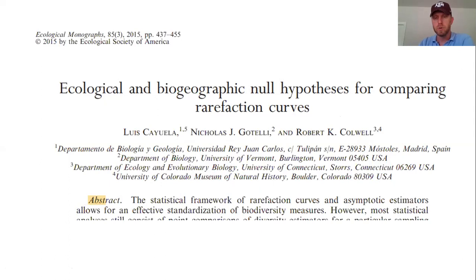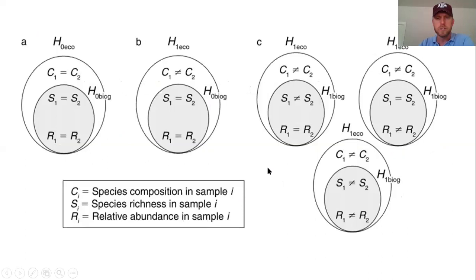We'll go over in this lecture how we think about some of those metrics of species diversity. Ecological Monographs tends to have longer, more complex papers, but I'll just show you a couple of the conceptual diagrams from this paper that are relevant to the R package created based on it. This is the first figure from that paper - a conceptual diagram for their two null hypotheses.